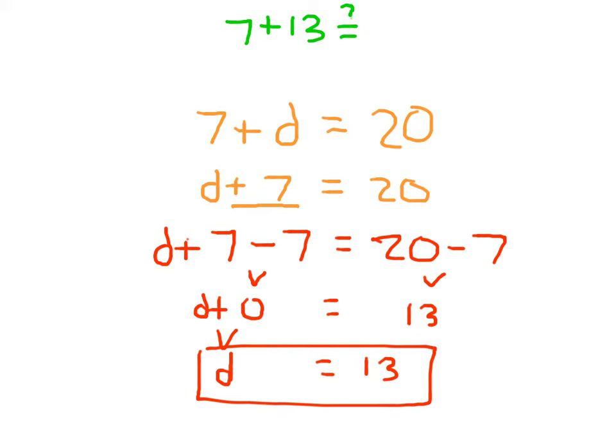If I needed to show my check, I could put a question mark over the equal sign. I plugged in that value of 13 for D, so it says 7 plus 13 equaling 20. And I evaluate each side so that 20 equals 20, and that's a check mark.